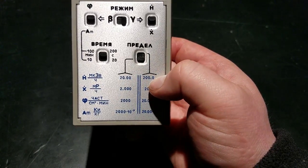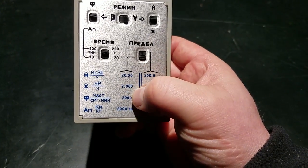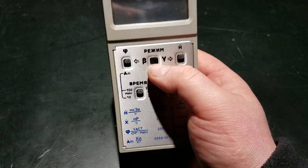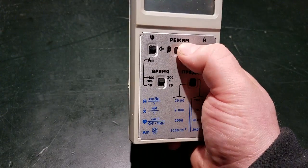There's two levels, like the max level here. You can have 20 microsieverts per hour or 200 microsieverts per hour, or 2 milliroentgens per hour or 20 milliroentgens per hour. That's in gamma mode.